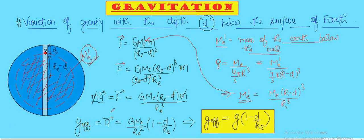Acceleration due to gravity as GM_e upon r_e^2, and out of this cube I am taking one r_e inside the bracket, which gives me 1 minus d by r_e. So this is the effective gravity at a depth d below the surface of the Earth.